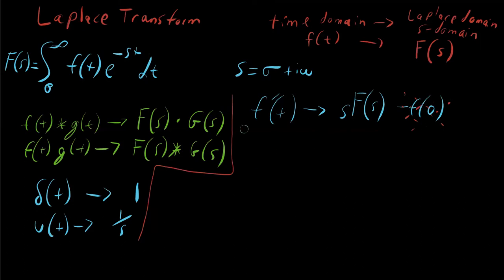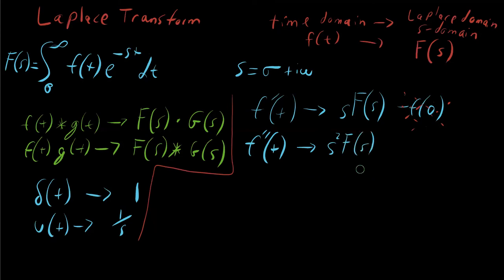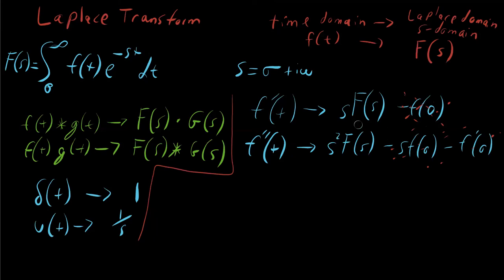It's not just single differentials — this extends to second orders as well. The second derivative of f of T in the Laplace domain is S squared times F of S, minus S times f of zero, minus f prime of zero. Again, for most instances these initial condition terms will just be zero. Look at what this is doing: it's taking differential equations and turning them into just multipliers of S.